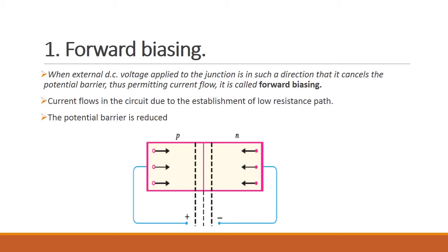First, let us see what is forward biasing. Forward biasing means P-type semiconductor is connected to the positive terminal of the battery, and N-type semiconductor is connected to the negative terminal of the battery. This process is called forward biasing. When we connect P-type to the positive terminal, holes are also positive, so both repel each other.